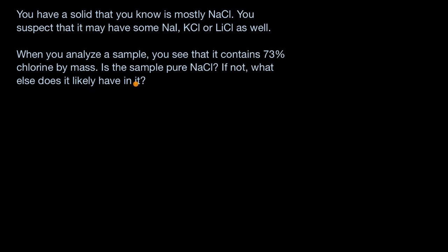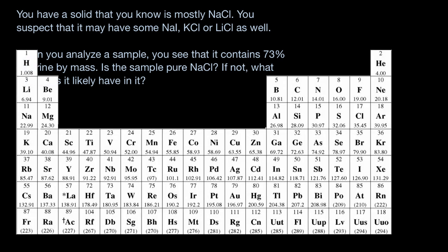Pause this video and see if you can figure that out, and it will likely be useful to have a periodic table handy to do it. The way we're going to approach it is we're gonna think about each of these compounds and try to figure out the percent chlorine by mass. To do that, we have to think about the molar masses of the various constituent elements that make up those compounds.